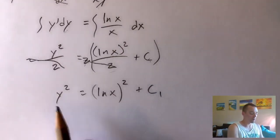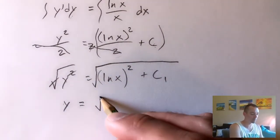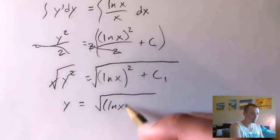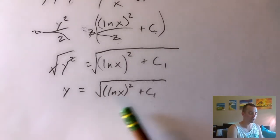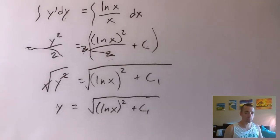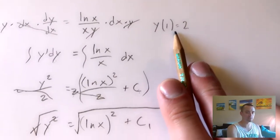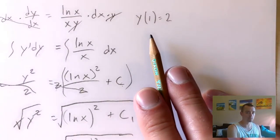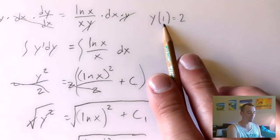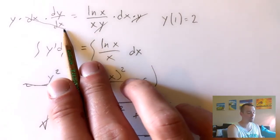So now we have y squared equals natural log of x all squared plus C₁. To get y by itself, we take the square root of both sides. The square root and the squared cancel on the left, giving us y equals the square root of natural log of x all squared plus C₁. Note that the square root and the squared do NOT cancel on the right because we have this constant being added in. This is where the initial condition comes into play.